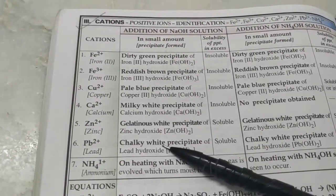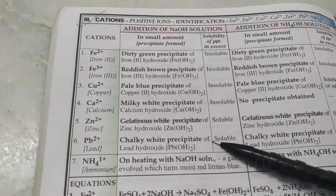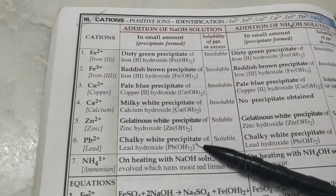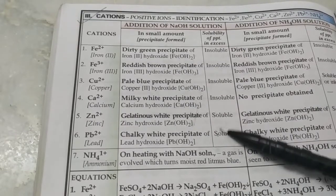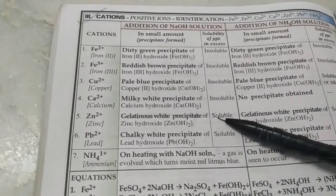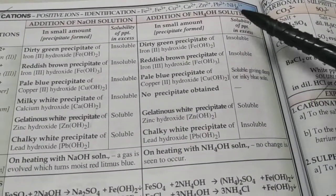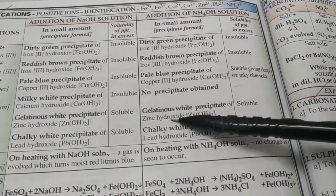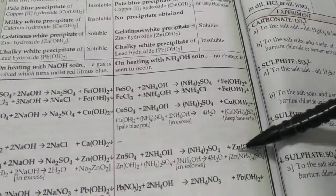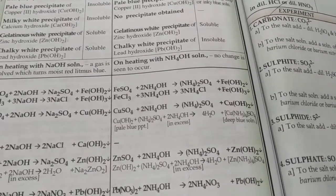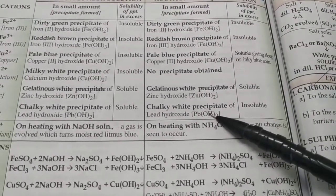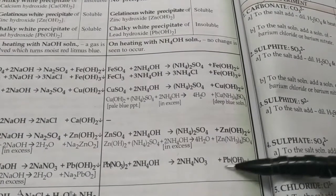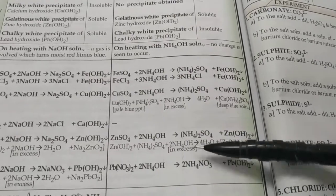Lead also gives a chalky white precipitate soluble in excess NaOH. To distinguish between zinc and lead salts, don't use NaOH since both ultimately give a colorless solution. Instead, use ammonium hydroxide: zinc salts form a gelatinous white precipitate soluble in excess (forming tetramine zinc sulfate), whereas lead's precipitate is insoluble even in excess NH4OH.